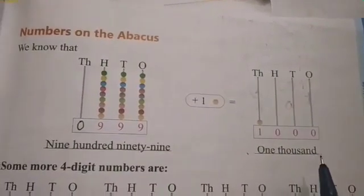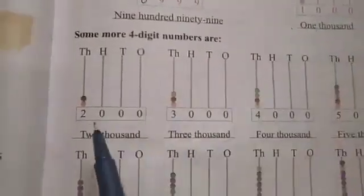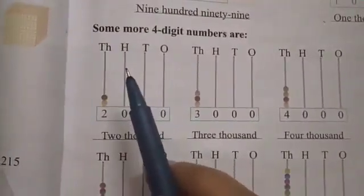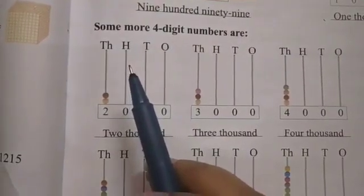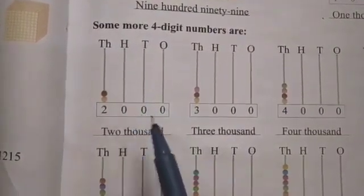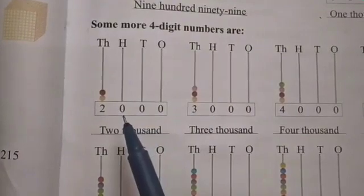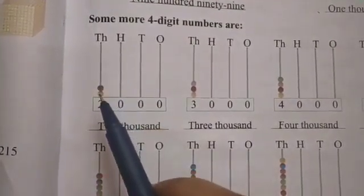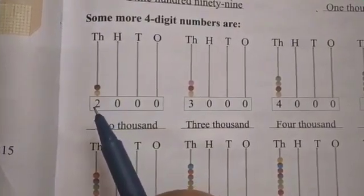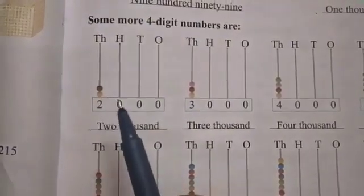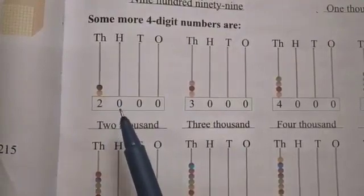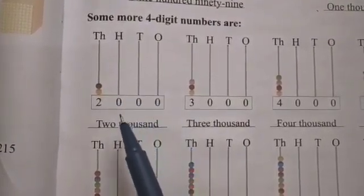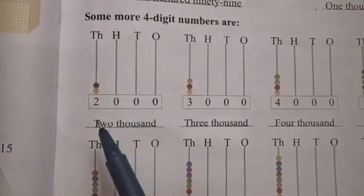Now here in the first Abacus, there is no bead at the 1's, 10's, and 100's places, so we will write 0 at these 3 places. But at the 1000's place there are 2 beads, so we will write 2 there. The number formed is 2,000, and its number name is two thousand.